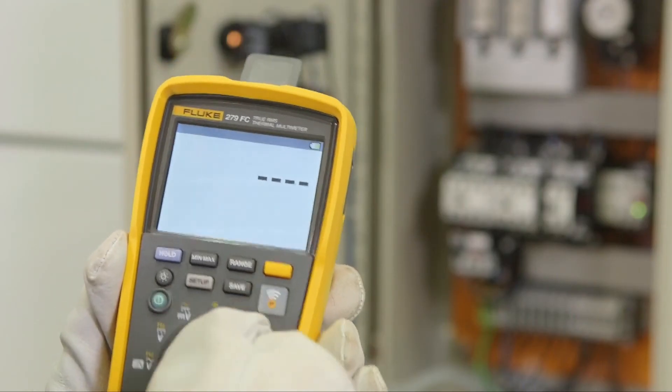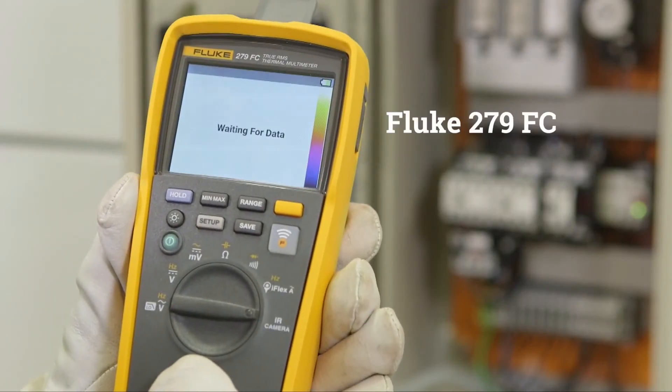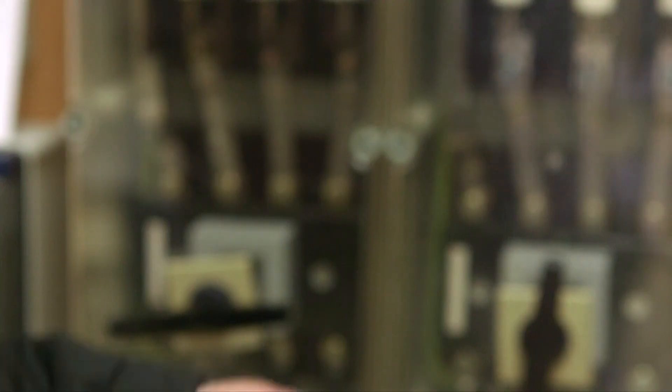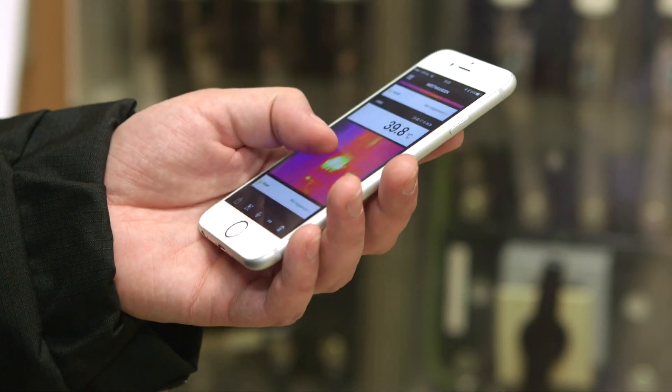If you want to define, based on temperature, where to perform measurements, we recommend the 279 FC. It offers the ability to remotely read measurements via your smartphone.